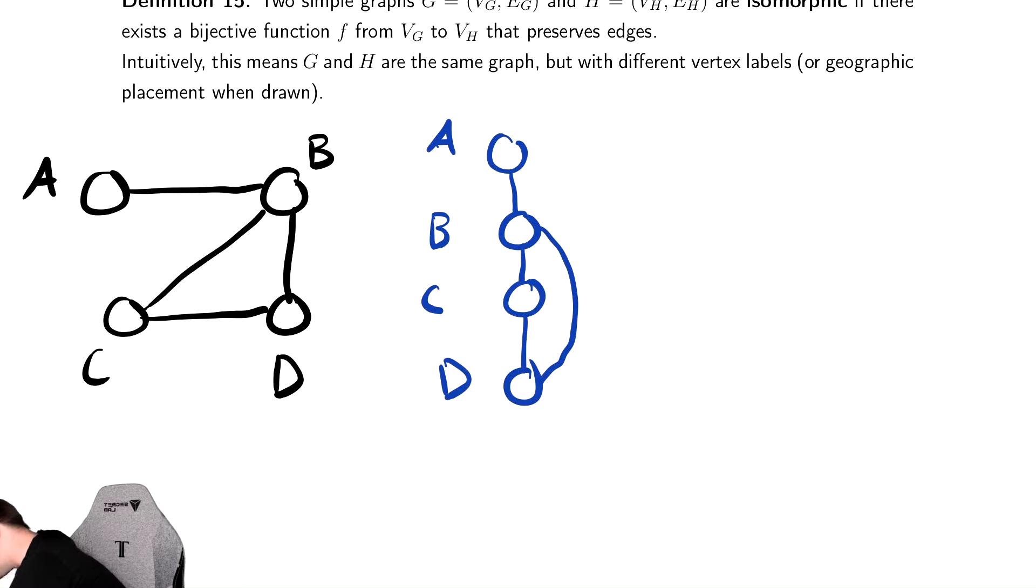So I'm going to have a graph on the right that looks like this, I'm going to label these as V1, V2, V3, and V4. And I'm going to have V1 connected to V2, V2 connected to V3, V3 connected to V4, and V2 connected to V4 as well.